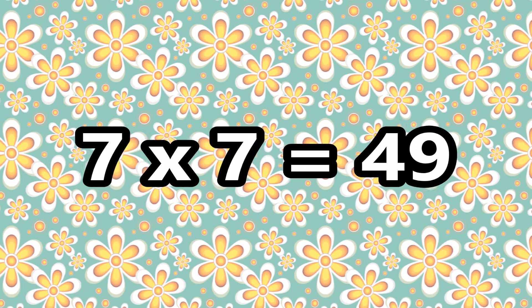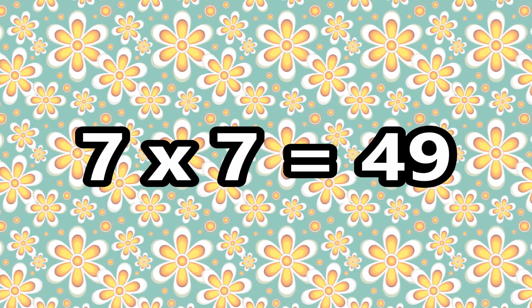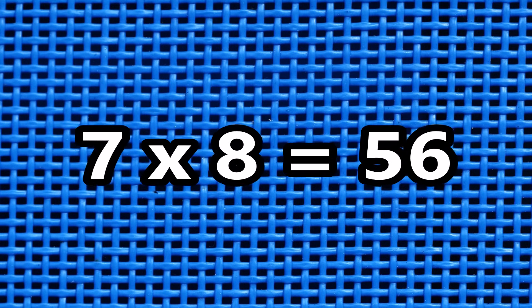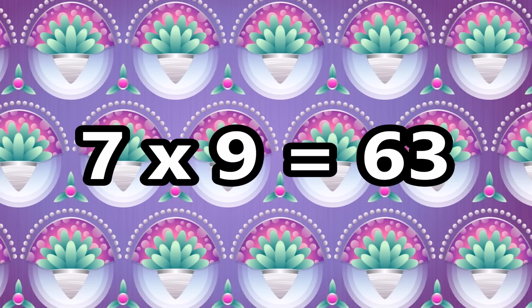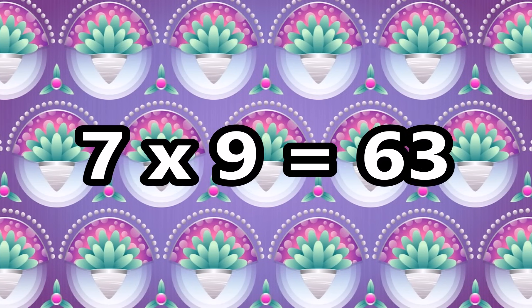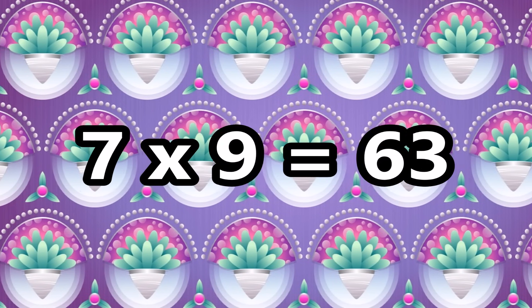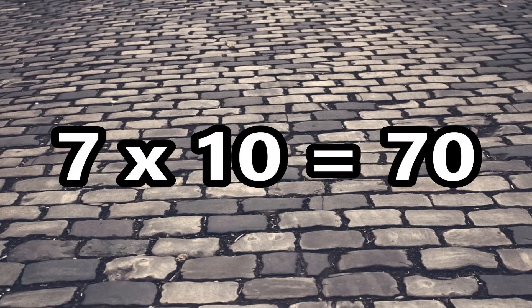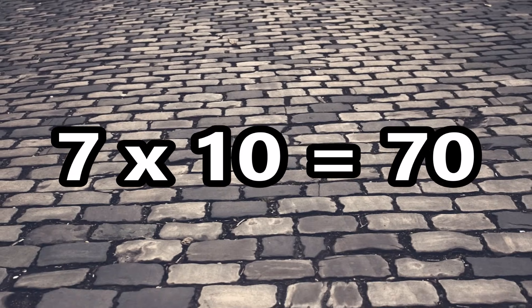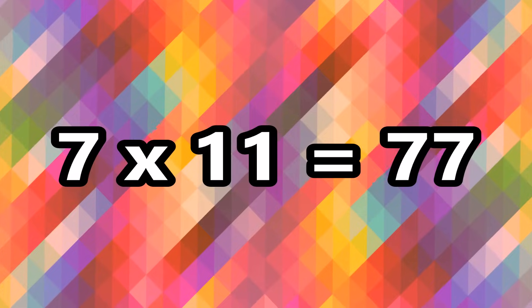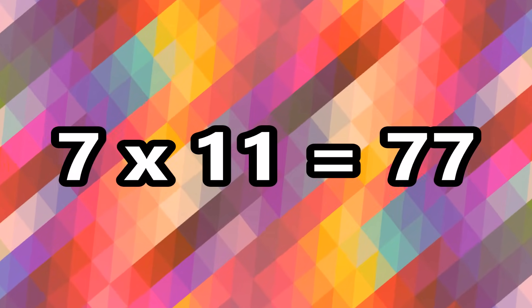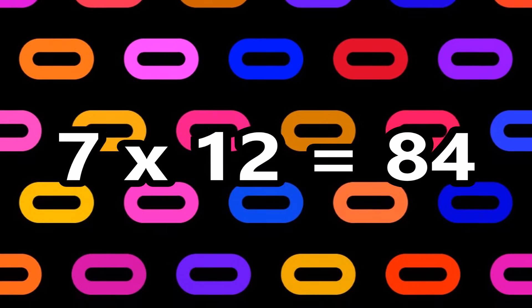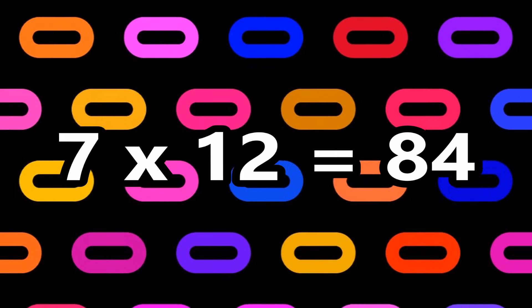7 times 7 is 49. 7 times 8 is 56. 7 times 9 is 63. And 7 times 10 is 70. 7 times 11 is 77. And 7 times 12 is 84.